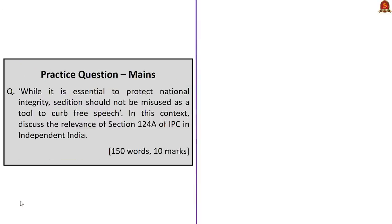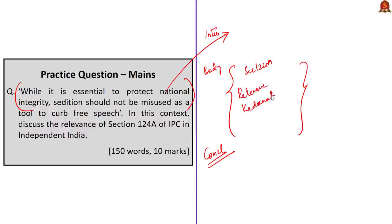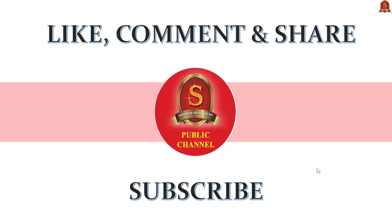Finally, the mains question: While it is essential to protect national integrity, sedition should not be misused as a tool to curb free speech. In this context, discuss the relevance of Section 124A in independent India. First explain why sedition should not be used to curb free speech; then discuss the provisions of Section 124A and whether they are necessary. You can discuss the Kedarnath Singh case, the Law Commission's 2018 report, and take a stand in the conclusion. Write the answer and post it in the comments section. Thank you for watching — if you find this video resourceful, like, comment, share, and subscribe to our YouTube channel.